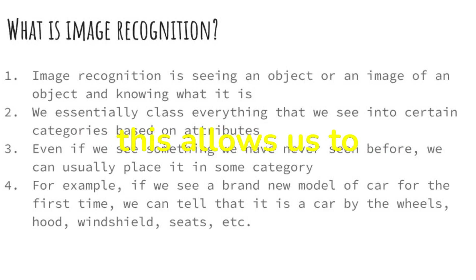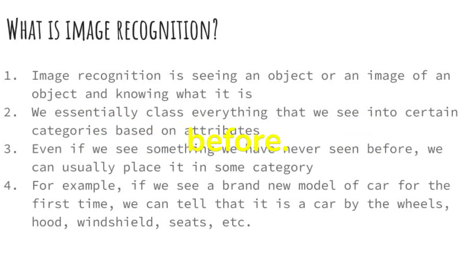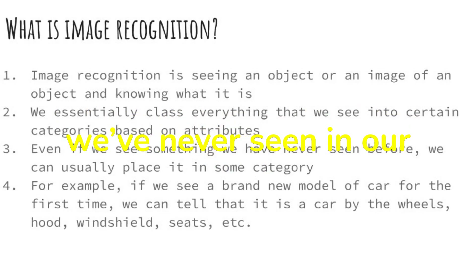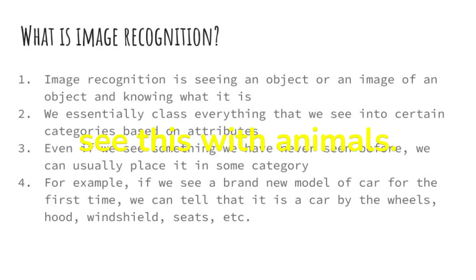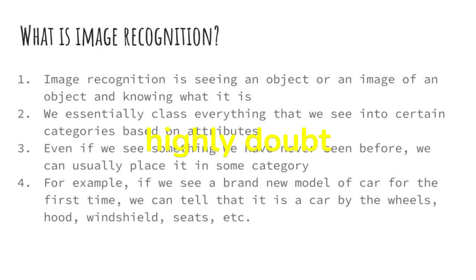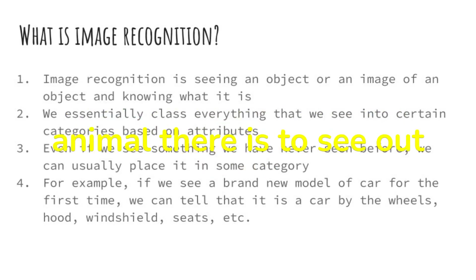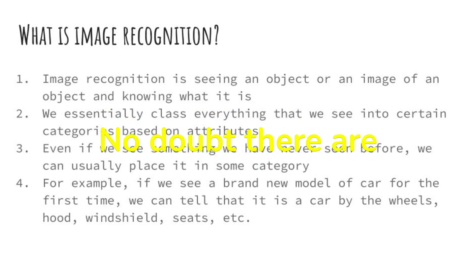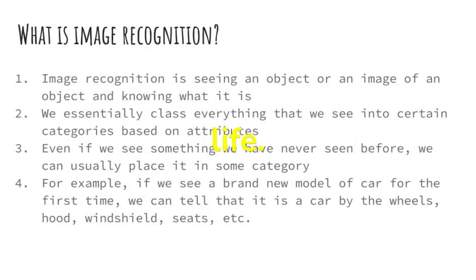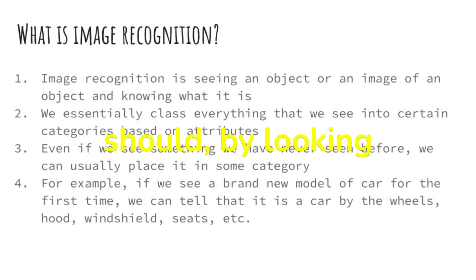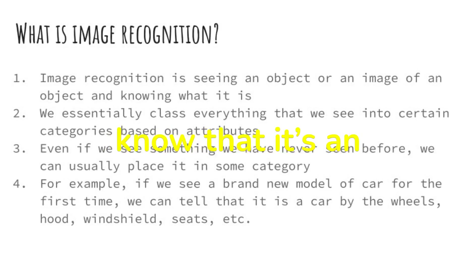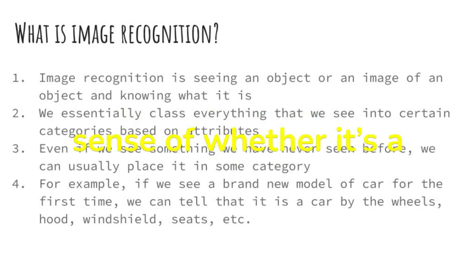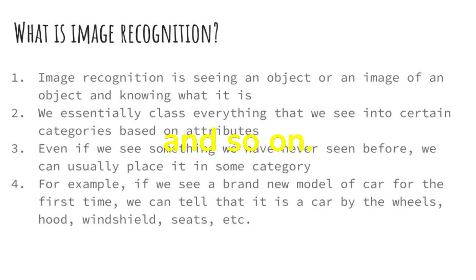This allows us to categorize something that we haven't even seen before — this is very powerful. We can take a look at something that we've never seen in our lives and accurately place it in some sort of a category. We can often see this with animals. I highly doubt that everyone has seen every single type of animal there is. No doubt there are some animals you've never seen before, but by looking at it, you should be able to place it into some sort of category — you should know that it's an animal, and have a general sense of whether it's a carnivore, omnivore, herbivore, and so on.